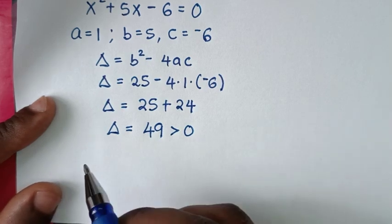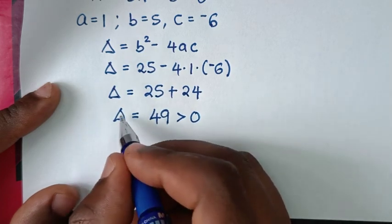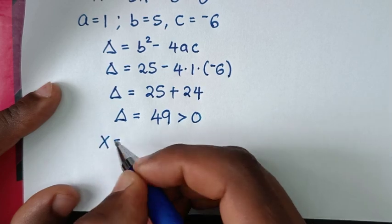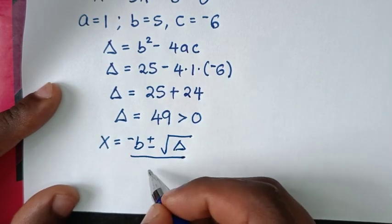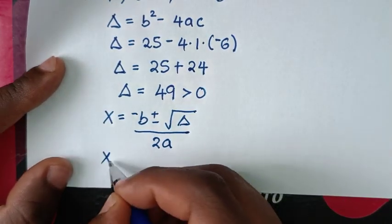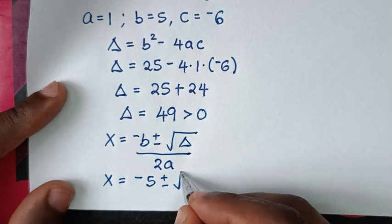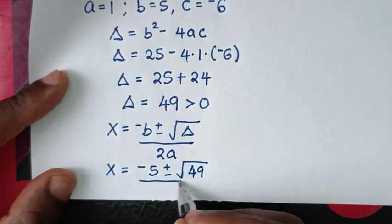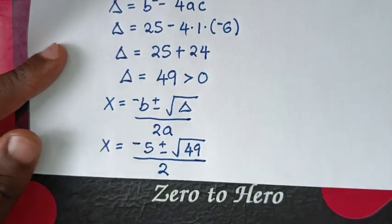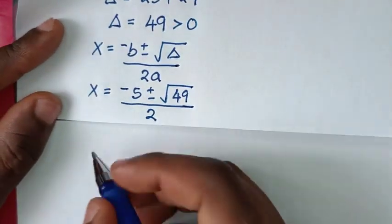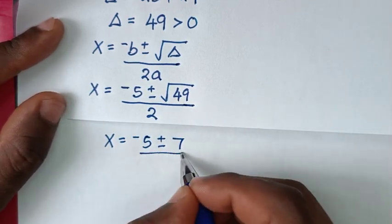Now to get the real values of x, using the quadratic formula with the discriminant of 49: x equals negative b plus or minus square root of 49, over 2a. So x equals negative 5 plus or minus 7, over 2. We have two solutions.